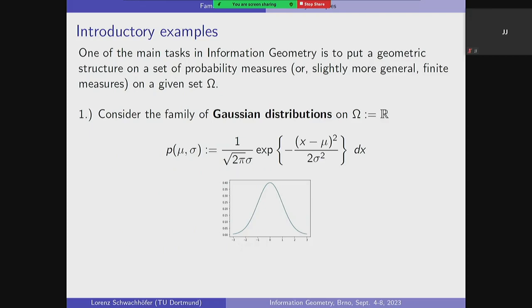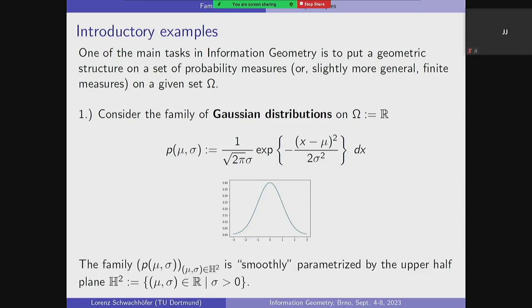So, families of probability measures — there's some that you've all probably seen from high school at some point. That's the Gaussian distributions on the real line: you have the expectation value mu, and you have the sigma which is the variance, and then you get a probability distribution. Mu is where the peak is, and sigma measures how it is distributed. You can view these as a family parametrized by some real number mu and some positive number sigma, so it's basically parametrized by the upper half plane.